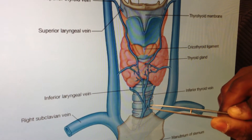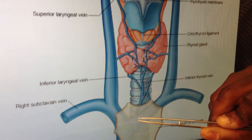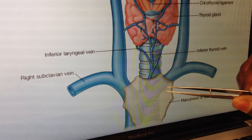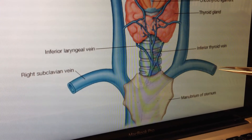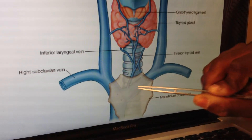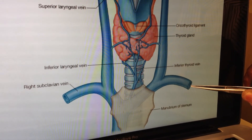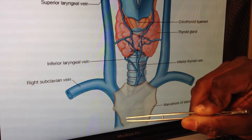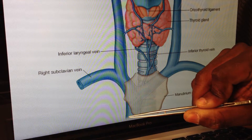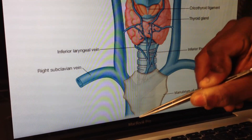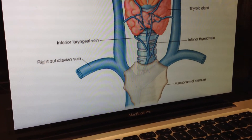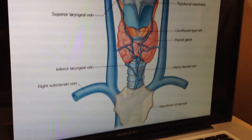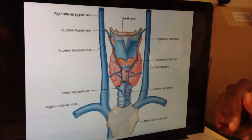The inferior thyroid vein is heading down and draining into your left brachiocephalic vein. Remember, 'brachio' means arm and 'cephalic' is head, so it's a vein connecting and draining your arm and your head. The brachiocephalic is going to drain into your superior vena cava, taking a contribution from your azygous vein before it goes into the right atrium of your heart. So this is your venous drainage: two arteries for supply, three veins to take away.